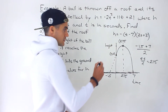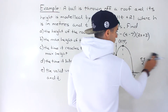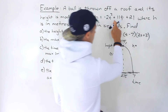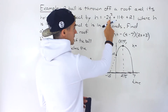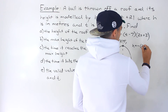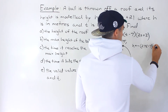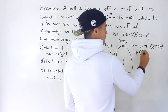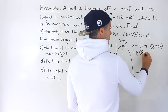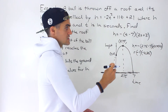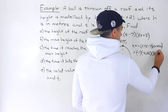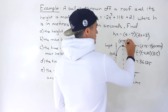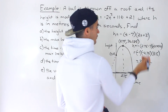To find the actual maximum height — the h value of the vertex — we plug t equals 2.75 into the factored equation. We get negative one times (2.75 minus 7) times (2 times 2.75 plus 3). That gives negative one times negative 4.25 times 8.5. Multiplying these together gives 36.125. So the h value of the vertex is 36.125 meters.